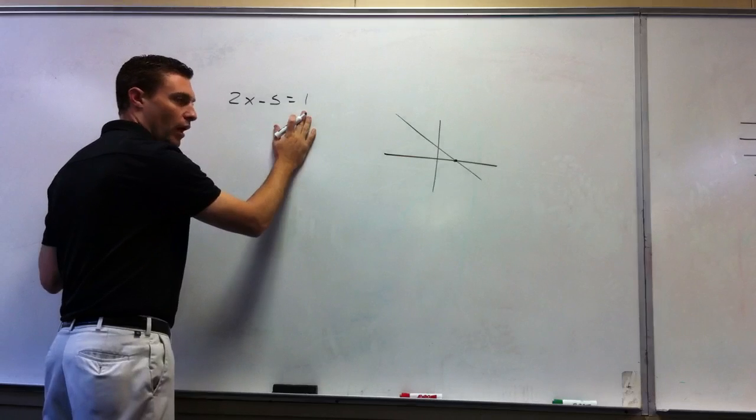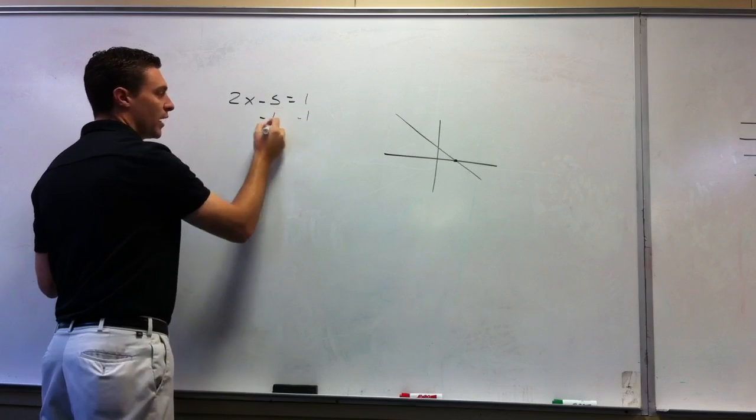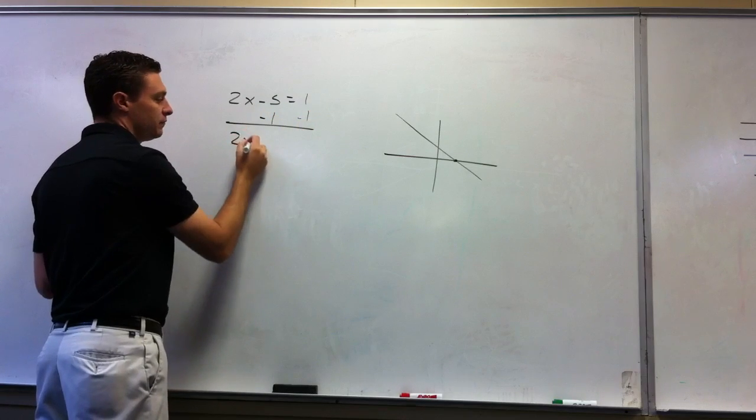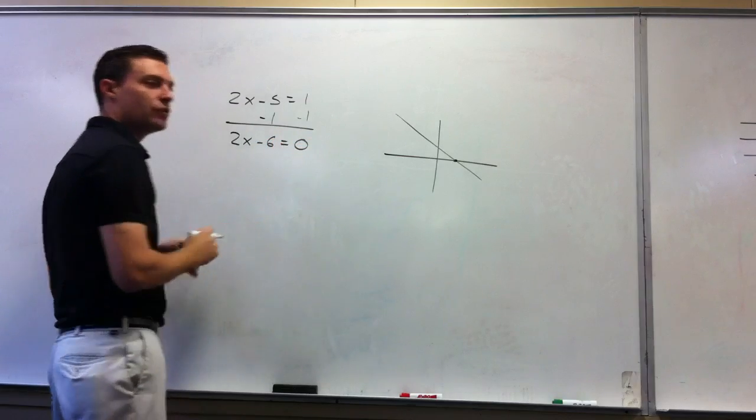What would I do to move this 1? I would subtract 1. So if I subtract 1 from both sides, I get 2x minus 6 equals 0.